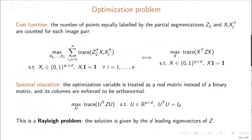This solution can be interpreted as an optimization problem. Consider a cost function counting the number of points equally labeled by the partial segmentation Z_ij and X_i times X_j-transpose for each image pair, written in compact matrix form. We then consider the spectral relaxation where the optimization variable is a real matrix with orthonormal columns rather than a binary matrix. The solution to this relaxed problem is given by the leading eigenvectors of Z, meaning the spectral solution solves a relaxed version of a suitable optimization problem.